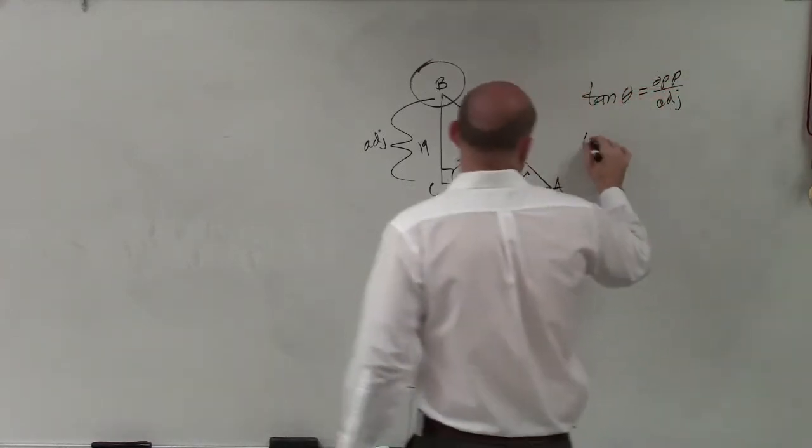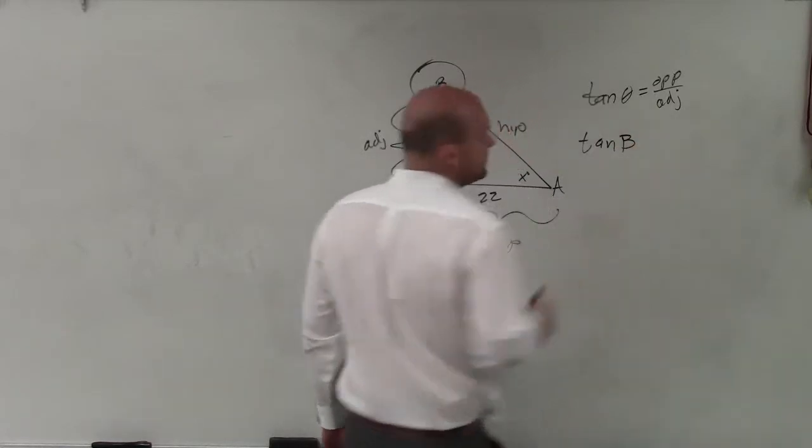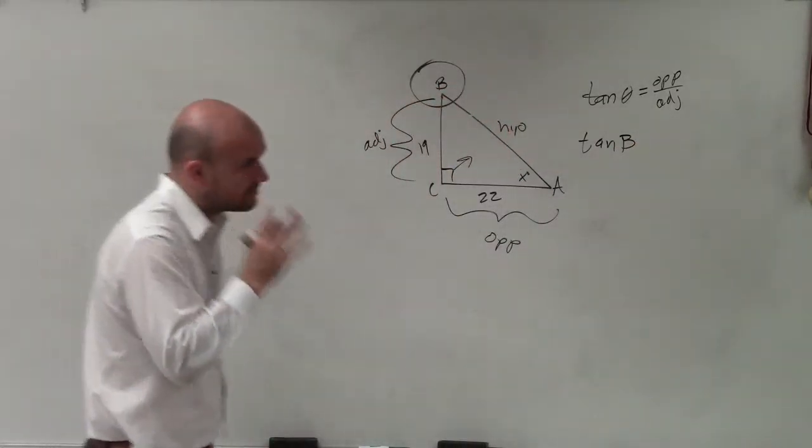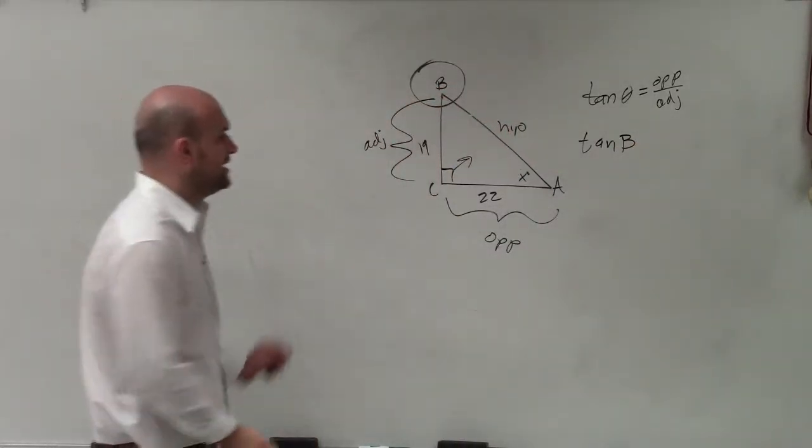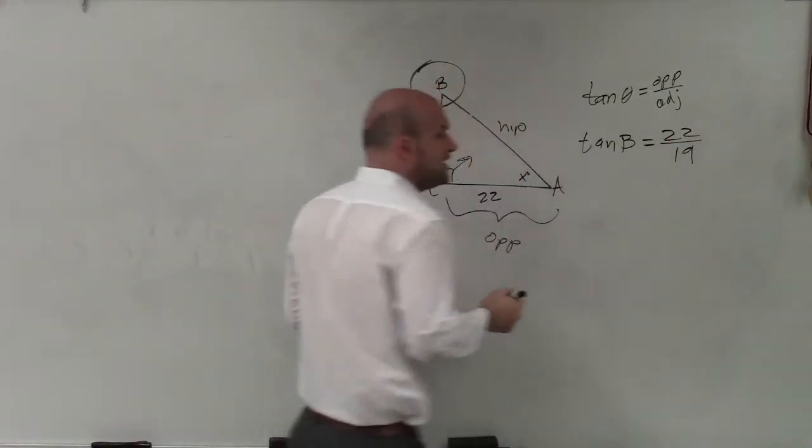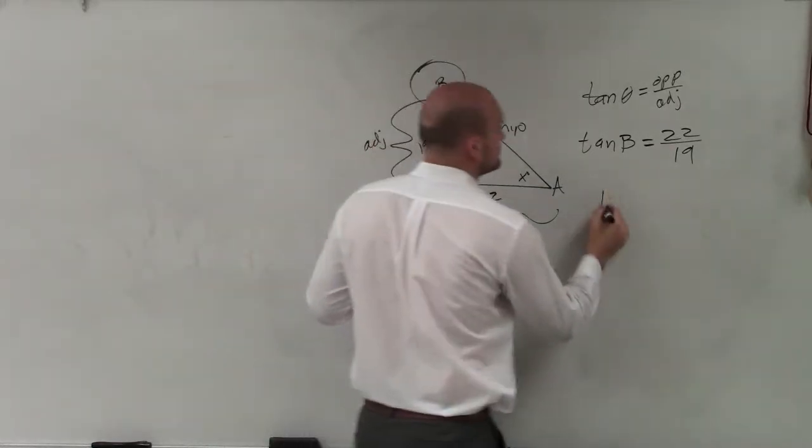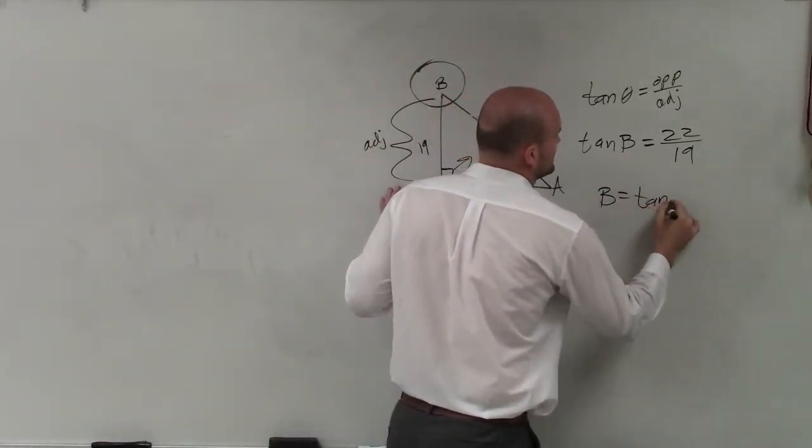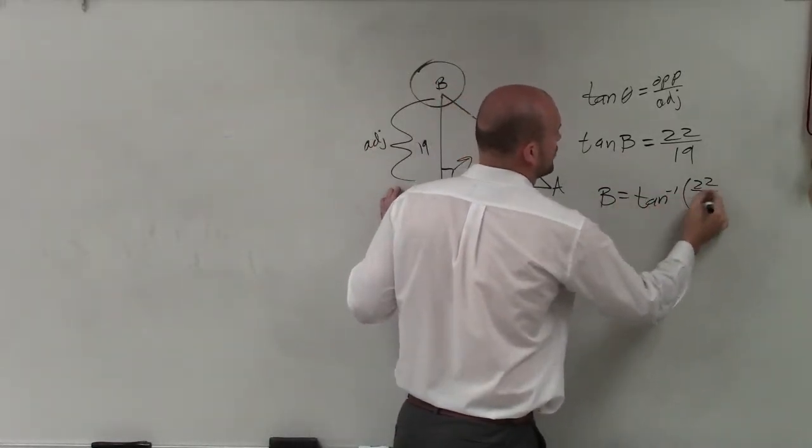So in this case, we have tangent of angle B that we're trying to find. Tangent of angle B, opposite over adjacent. Therefore, to find B, B equals tan inverse of 22 over 19.